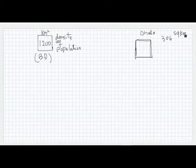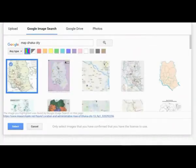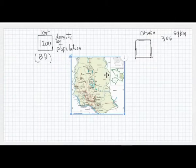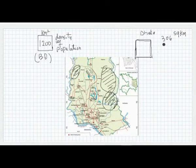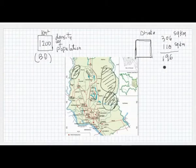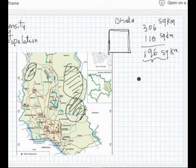This is Dhaka city. I'm bringing the Dhaka city map here. Okay, this is Dhaka city. How much is the area? 306, 109, or 1206 square kilometers is the Dhaka city area.